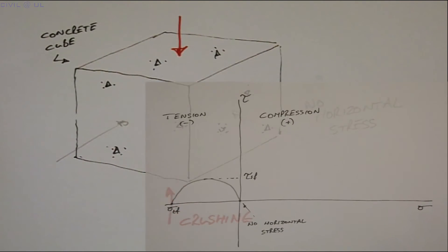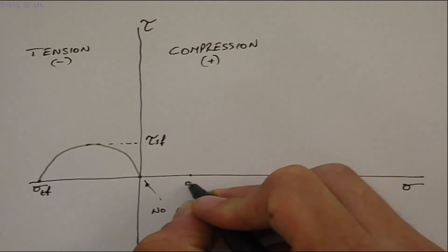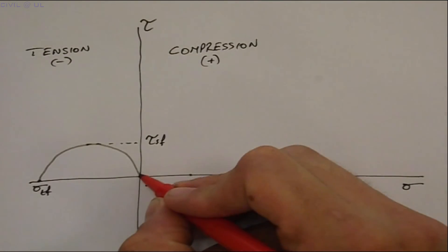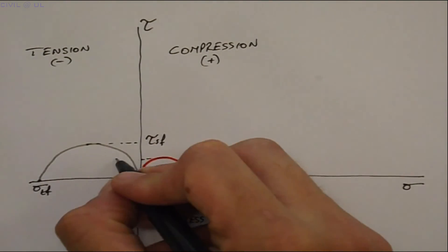This time, the Mohr's circle plots on the positive side of our normal stress axis, and we see the shear strength at failure occurs at tau.